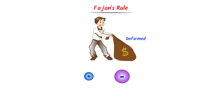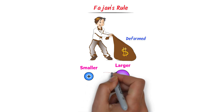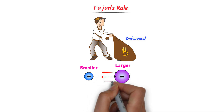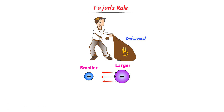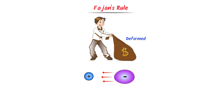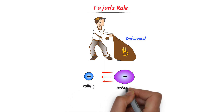Now consider these positive and negative ions. Here, the size of the cation is smaller and the size of the anion is larger. This positive ion or cation attracts the electrons of the anion. As a result of this, the electronic cloud of the anion gets deformed or distorted — the cation is like a man pulling the sack of electrons and it gets deformed.